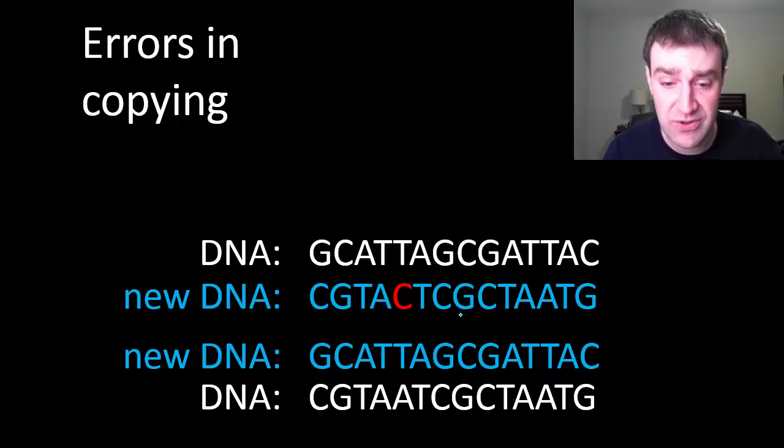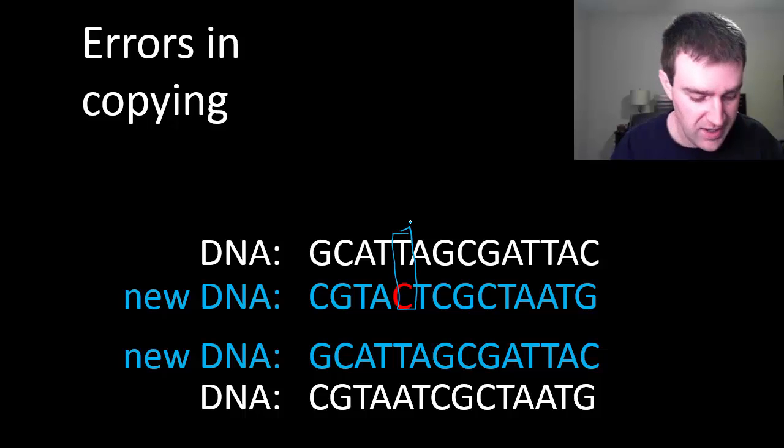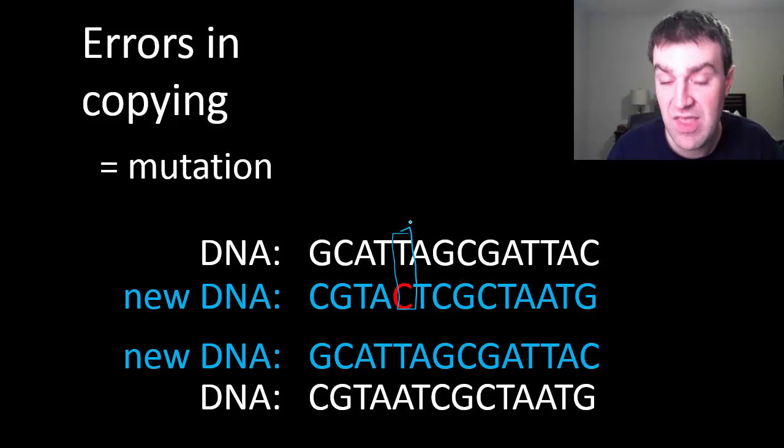Could there be errors in copying sometimes? So I just tried to show maybe a more extended piece here. And I tried to show maybe a mismatch in pairing here. So sometimes that can actually happen. An error in copying the DNA code is called a mutation.